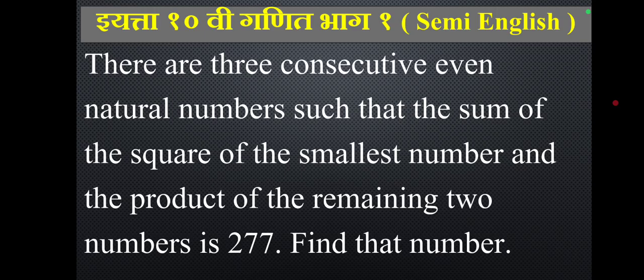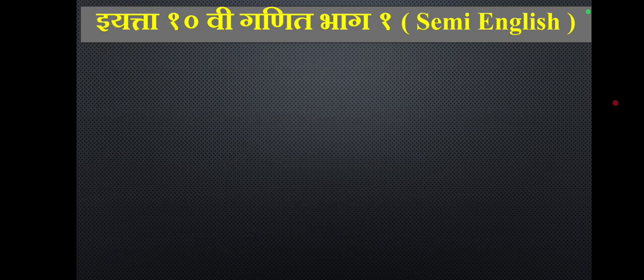There are three consecutive even natural numbers such that the sum of the square of the smallest number and the product of the remaining two numbers is 277. Find those numbers.